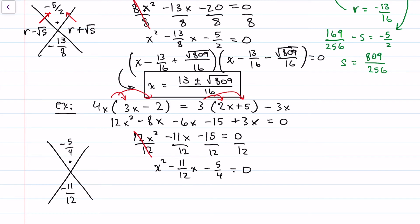Using the r ± √s method: adding the two roots, the radicals cancel and 2r = -11/12, so r = -11/24. For the product, using difference of squares: r² - s = -5/4. Now r = -11/24, and 11² = 121, 24² = 576, so 121/576 - s = -5/4.